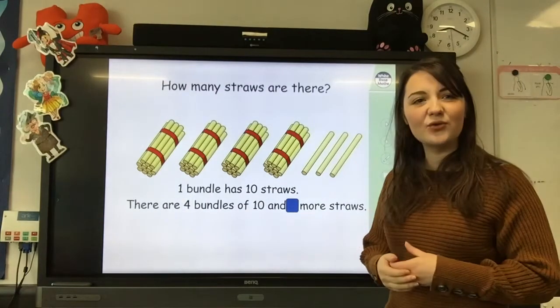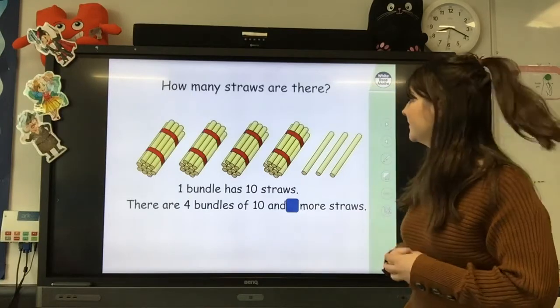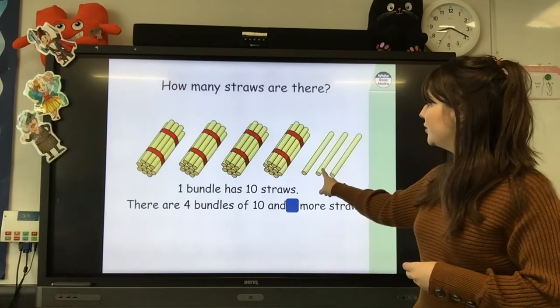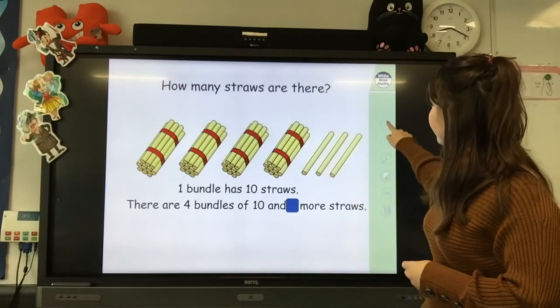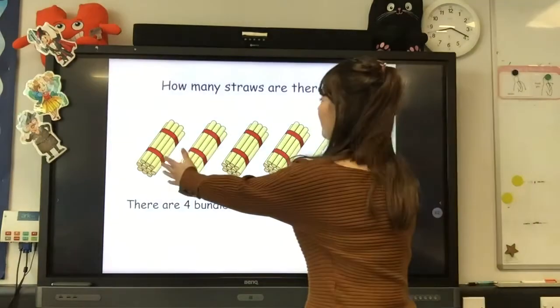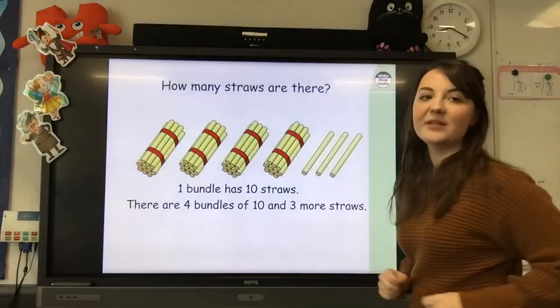How many straws are left on their own? They will be our ones. 1, 2, 3. There are 3 more straws. So we have 4 tens and 3 ones.